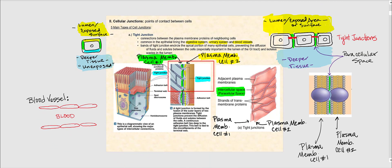Now let's talk about cellular junctions. They are points of contact between cells. Before getting into the five main types of cell junctions, I want to emphasize that we are going to be focusing on the plasma membrane — also referred to as the cell membrane — which is made up of the phospholipid bilayer.